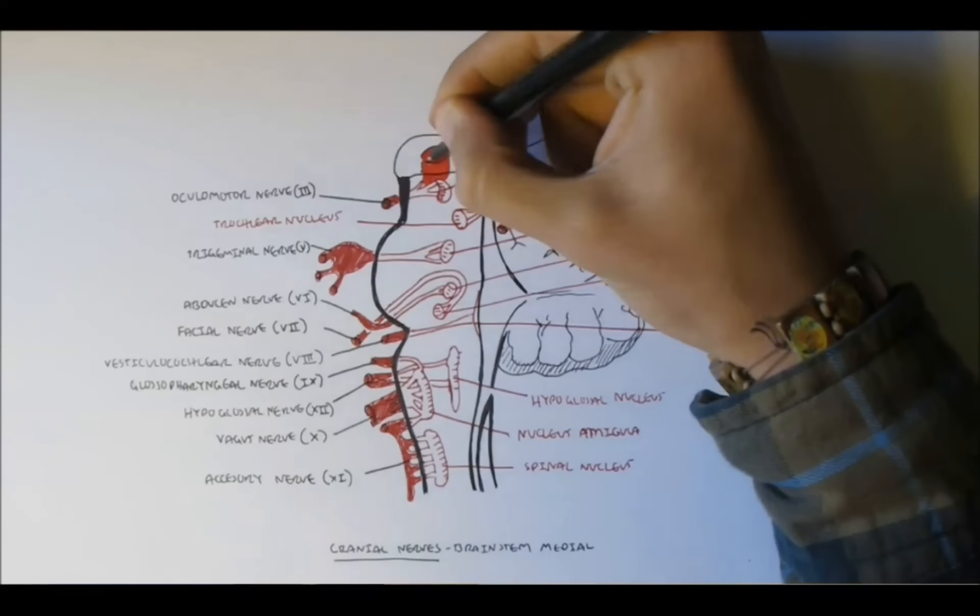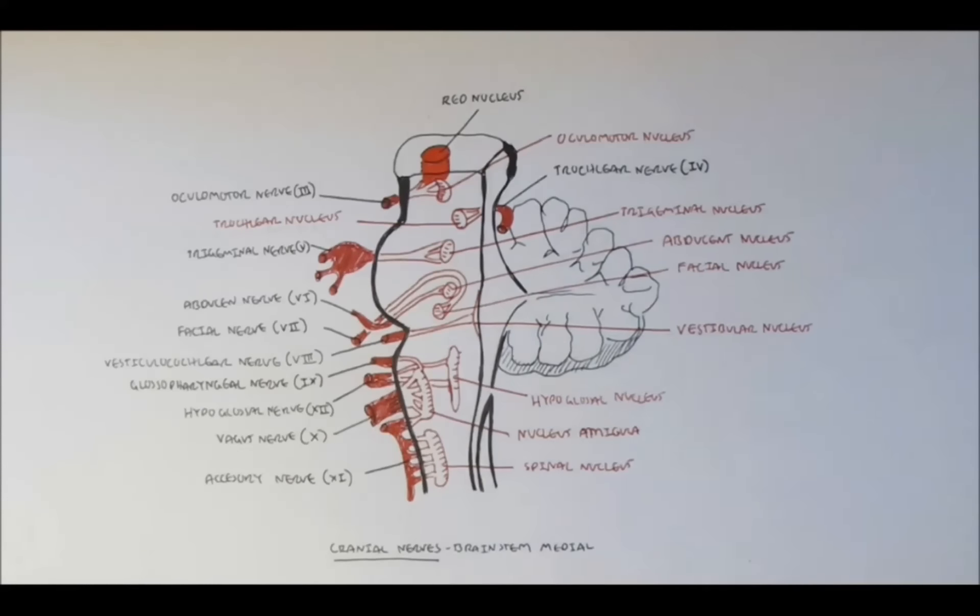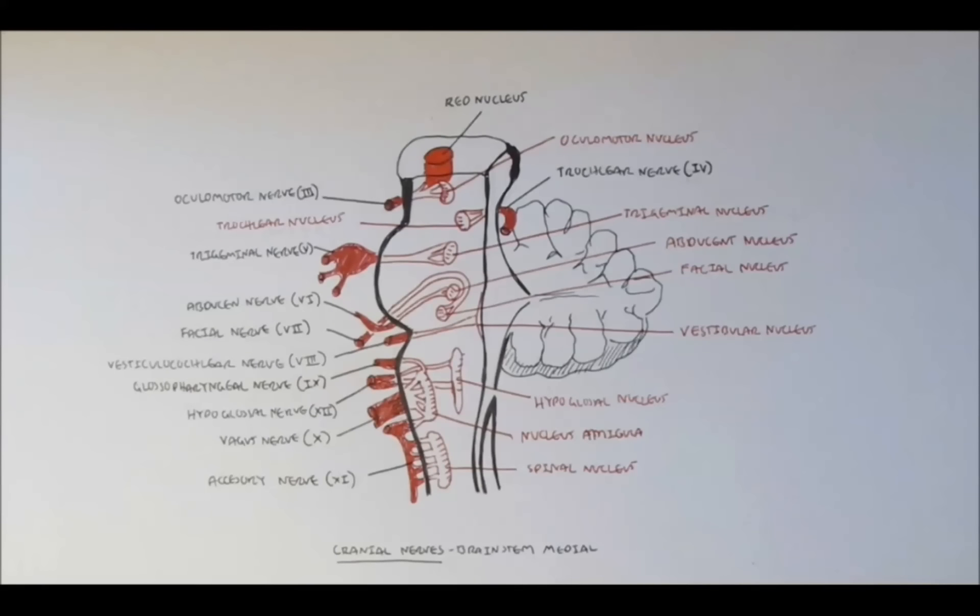And this red thing on the top is actually the red nucleus, and it attaches to the oculomotor nerve, nerve 3. And the red nucleus actually has a function in movement.